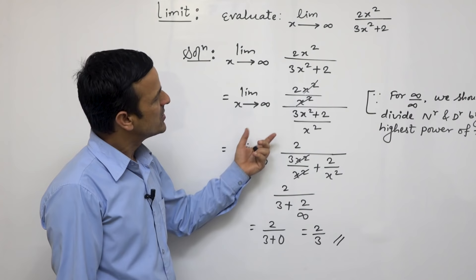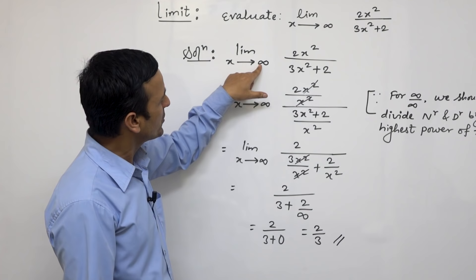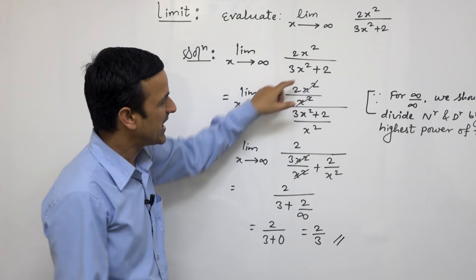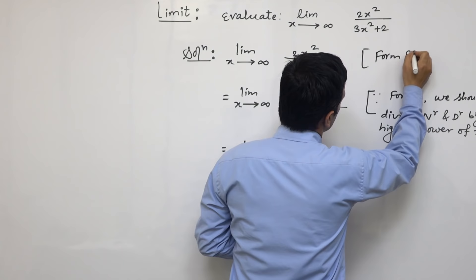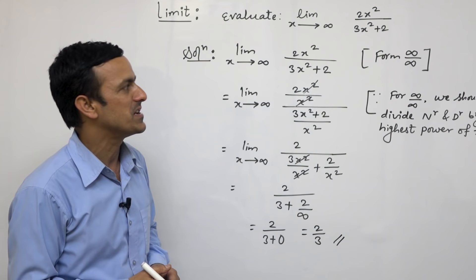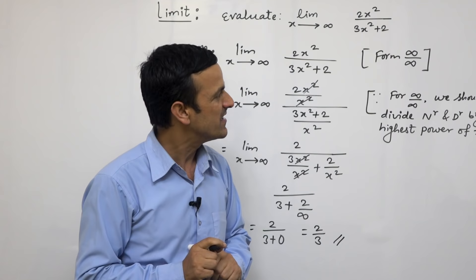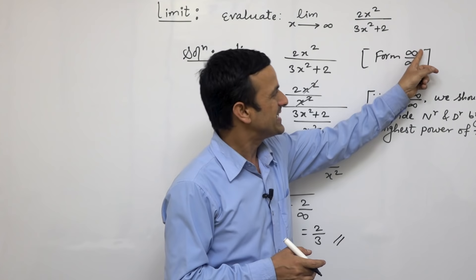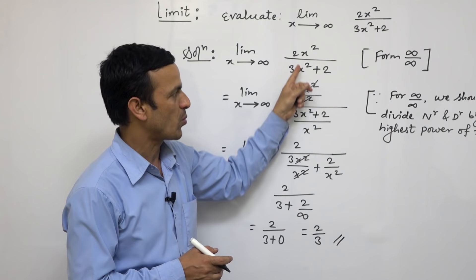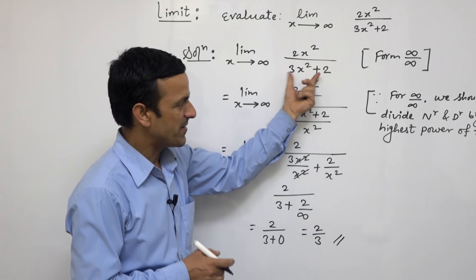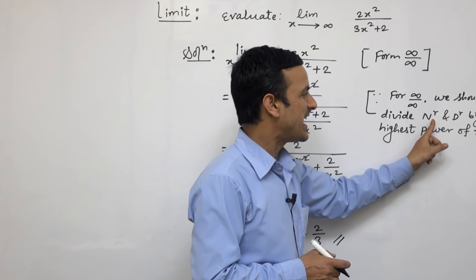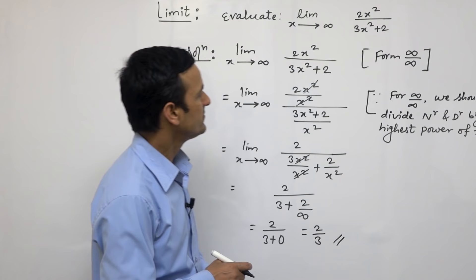This question is slightly different because if you put infinity in numerator and denominator, we get the form infinity by infinity. This is one of the indeterminate forms. There are three basic indeterminate forms: 0 by 0, infinity by infinity, and infinity minus infinity. That's why we have to eliminate the infinity by infinity form by dividing numerator and denominator by the highest power of x.